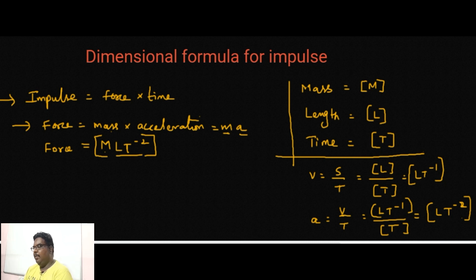I am showing you how I am getting this L T power minus 2. Velocity equals displacement by time. Displacement is length, so capital L divided by time capital T. If you bring it to the top it will be T power minus 1. So L T power minus 1 is the dimension formula for velocity.